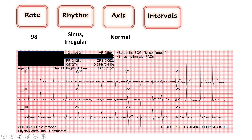Next we're going to look at our intervals. The two we're most concerned about are our QRS and our QTc. Again, we let the computer do the work here. The QRS is 92 — that's less than 120, very happy with that number. And our QTc is 410 — that's less than 450. So I would call our intervals normal here.